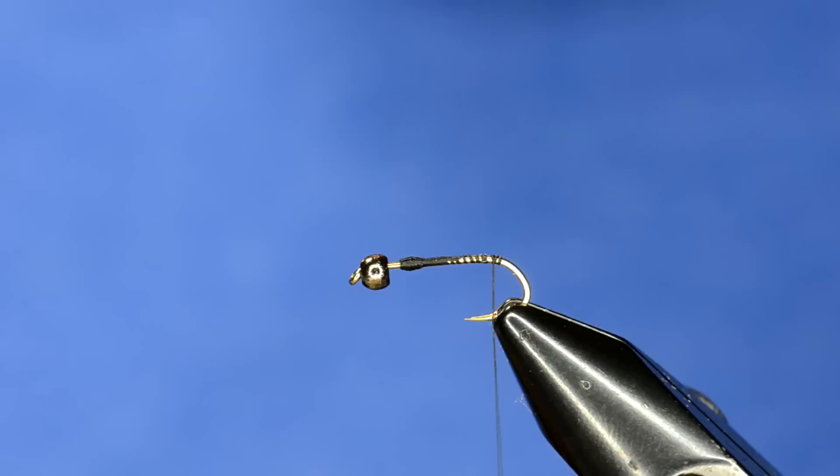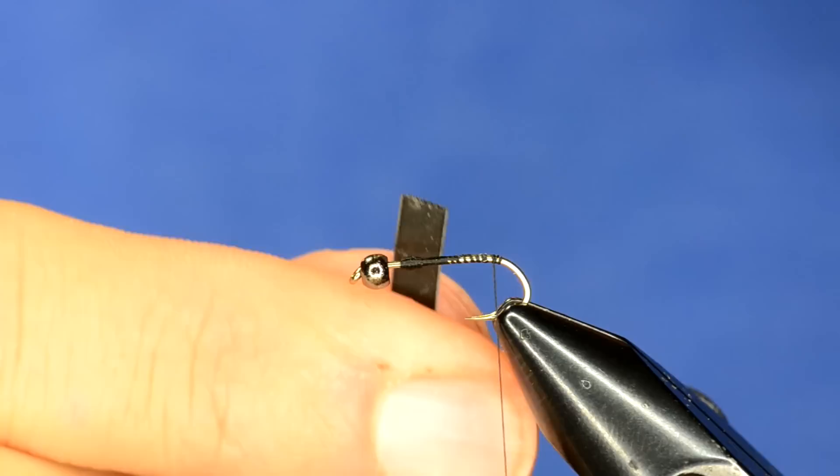Now I'll work my way right before the bend of the hook. And this fly is actually really simple. We're going to use some Jason Nymph Skin, and this is the black color.